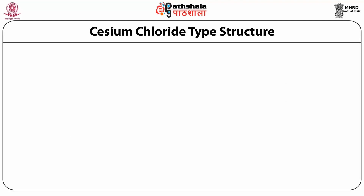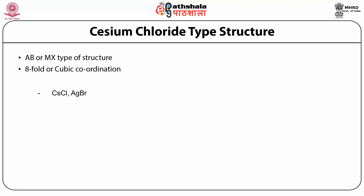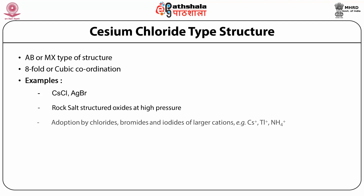Now comes caesium chloride type structures (CsCl). Such structures are AB or MX type structures. Some examples are halides such as caesium chloride, silver iodide, silver bromide, etc. They have 8-fold or cubic coordination. Other examples include rock salt structured oxides at high pressures, and adoption by chlorides, bromides, and iodides of larger cations. The caesium chloride type structures have a primitive cubic lattice. The motifs are: for anion X it is (0,0,0); for cation M it is (½,½,½). It has one formula unit per unit cell.